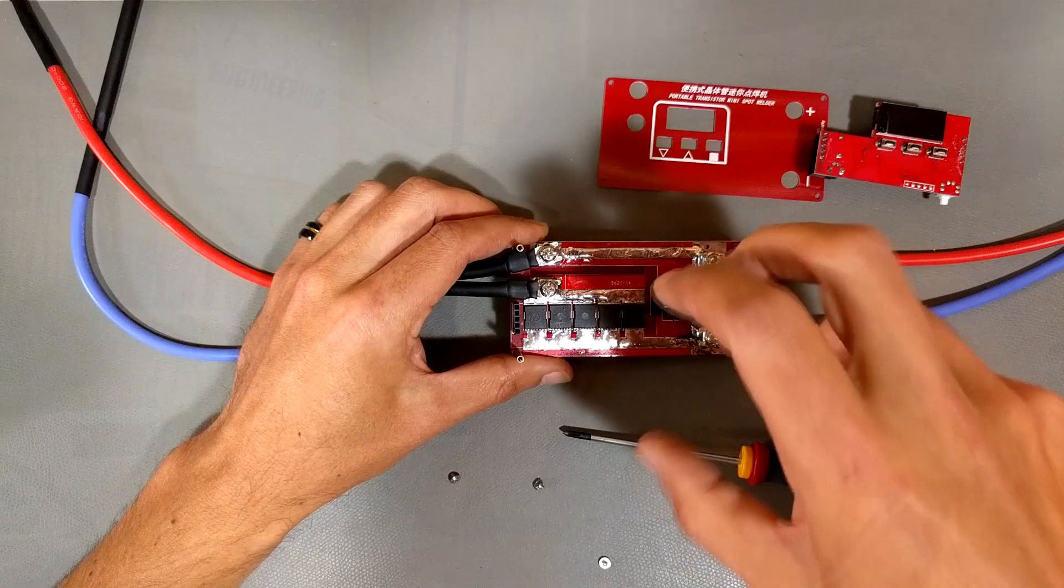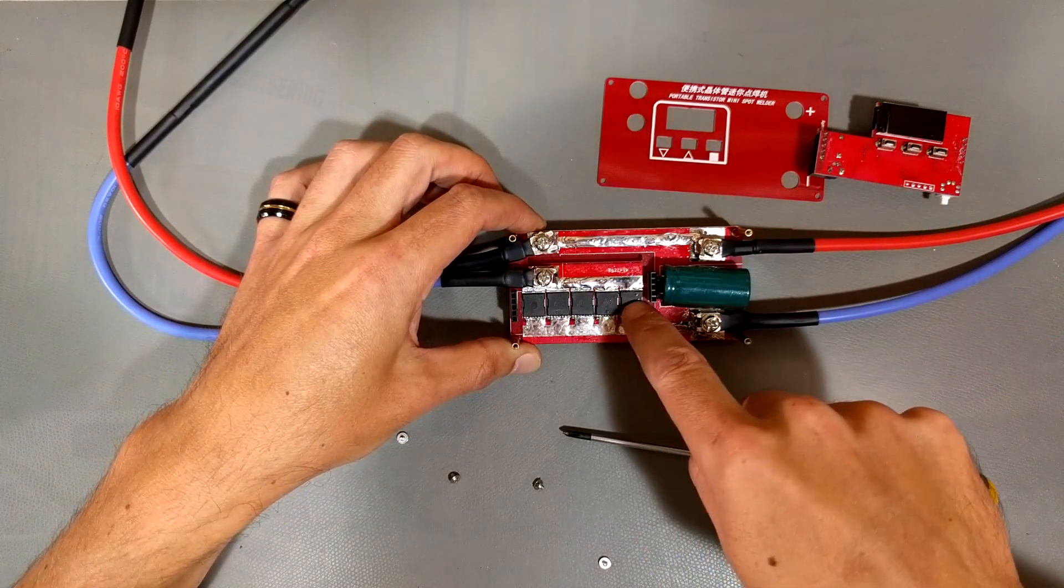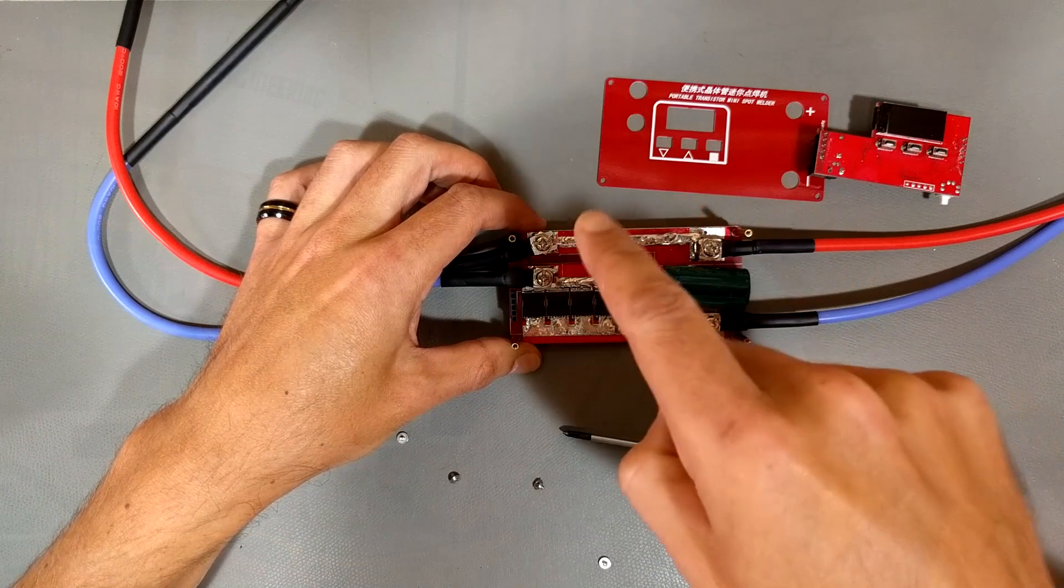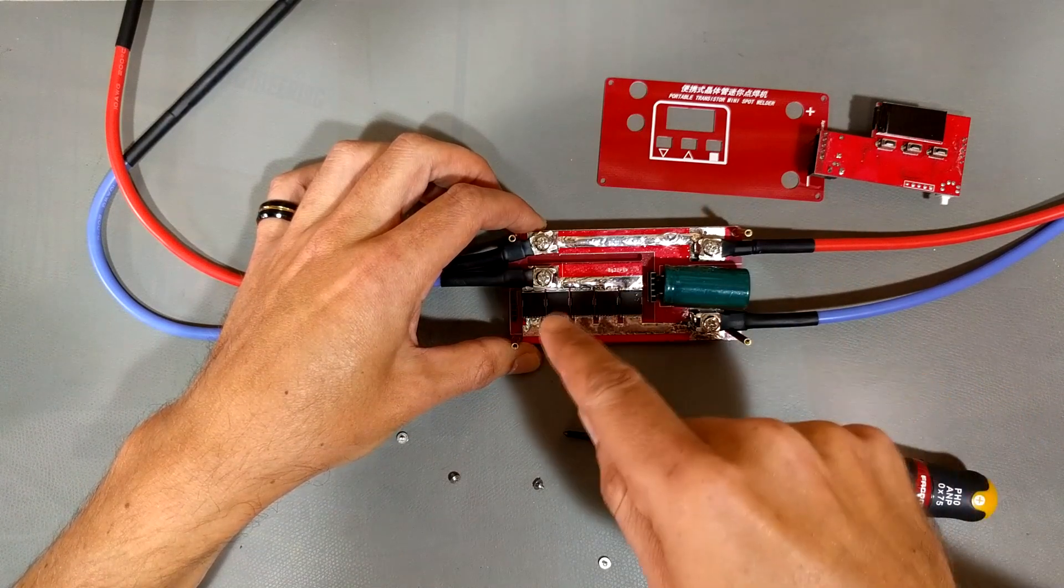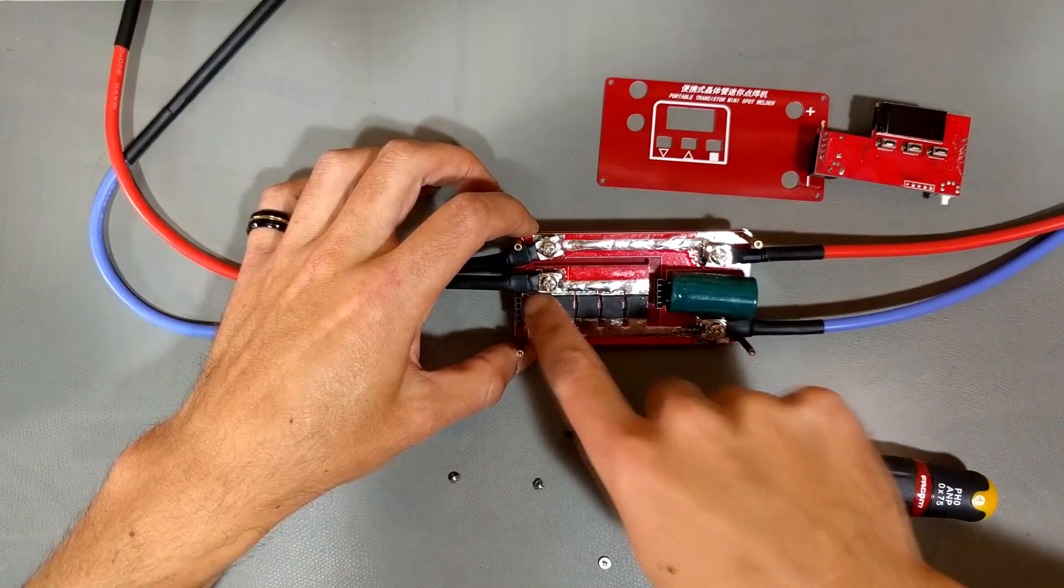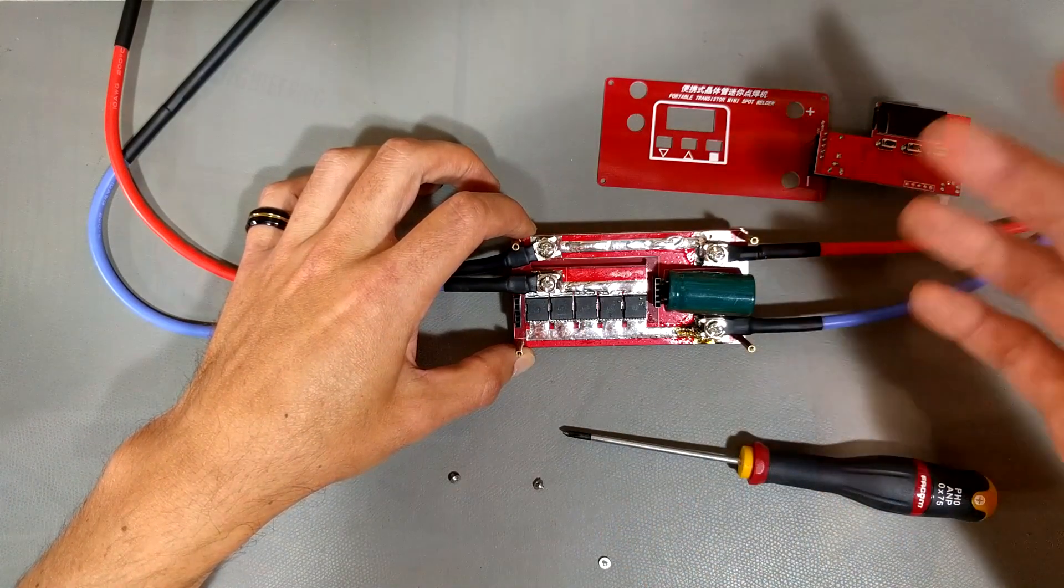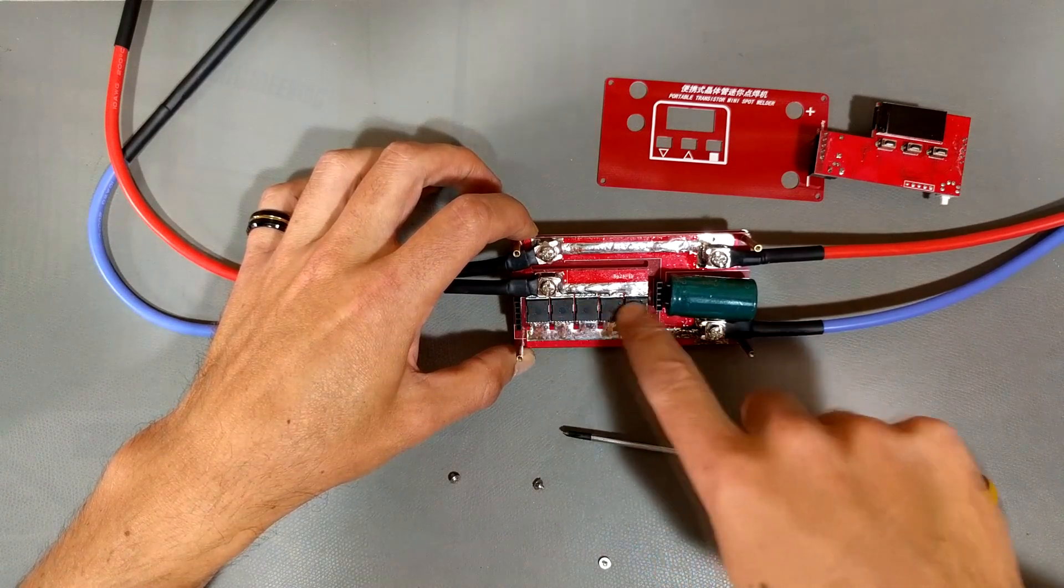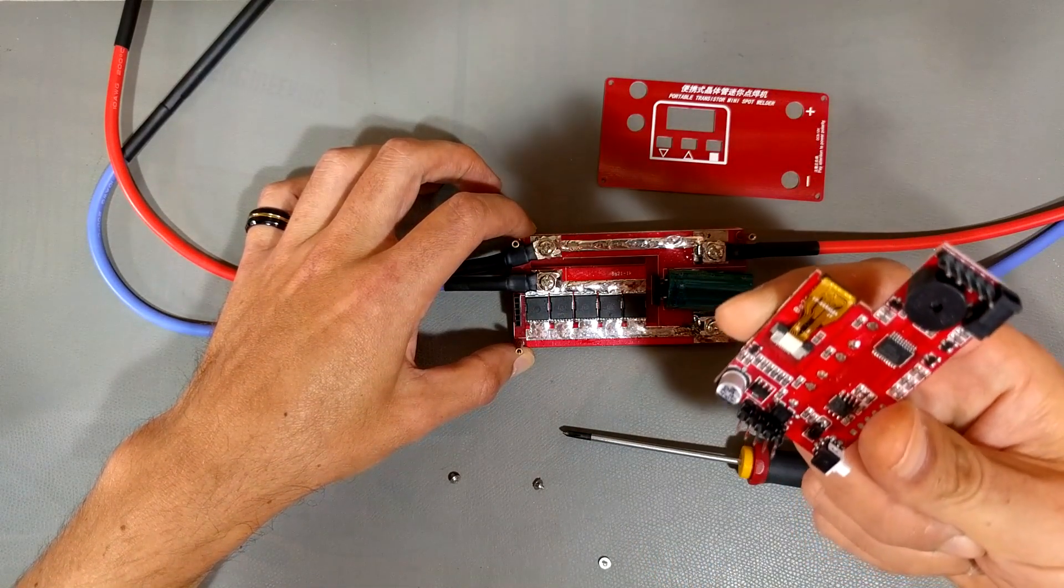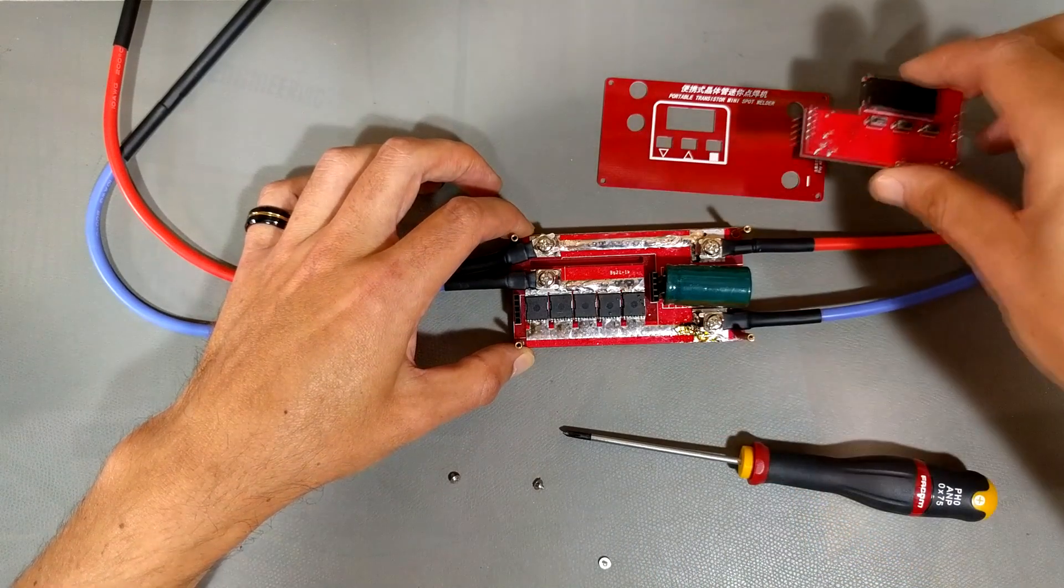But basically what happens is the positive just passes right through from the battery. The negative goes here, and then this controller board is actually going to turn these off—these are basically five switches. What should happen is the controller board, when you touch the two probes to the battery, senses that and then keeps these switched off until it's ready to give its pulse. Then it turns these five switches on and off really quickly, which gives you that short little pulse. But what's actually happening is these are basically an open circuit, so they're shorted. You don't get a pulse. Either these MOSFETs are dead or the controller board is actually toast and not doing what it's supposed to do. But ah well, shucks. Well there you have it—weld number four and it went kaput.